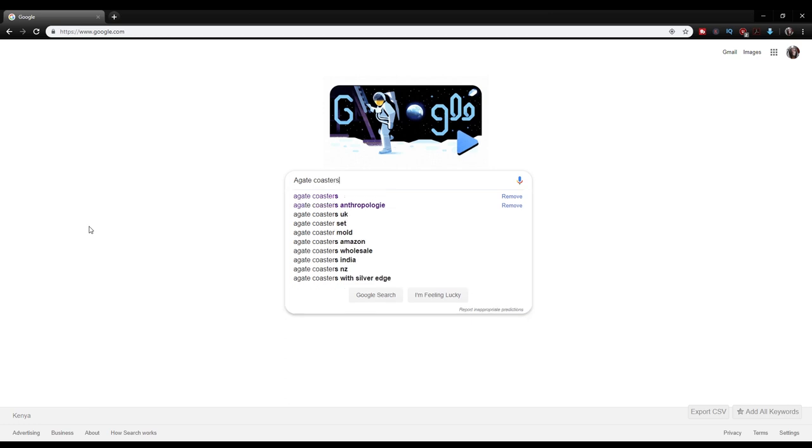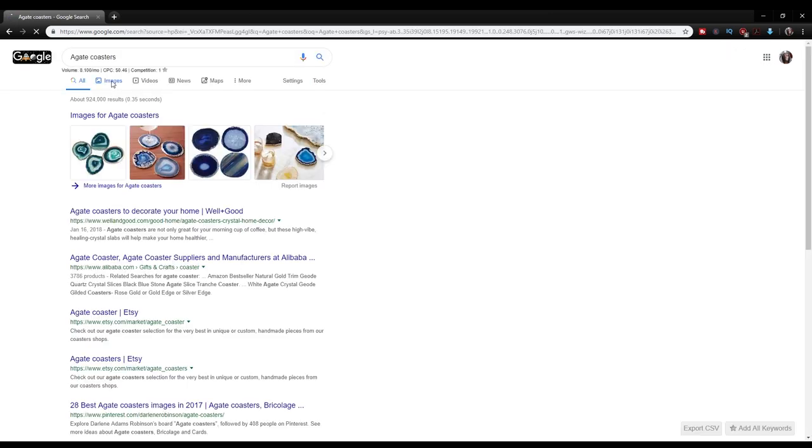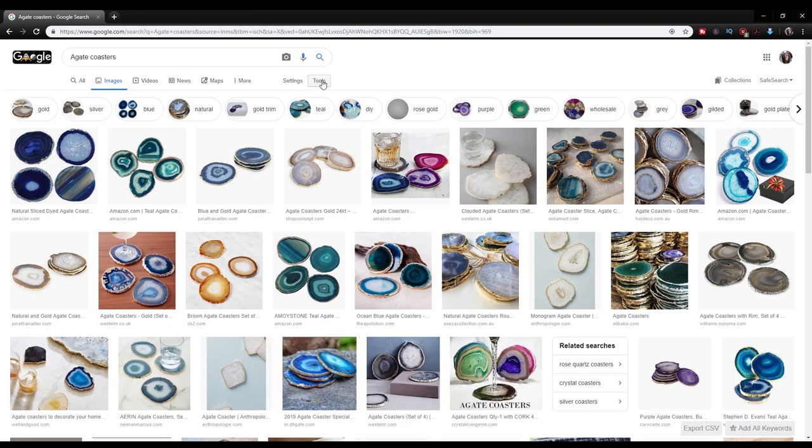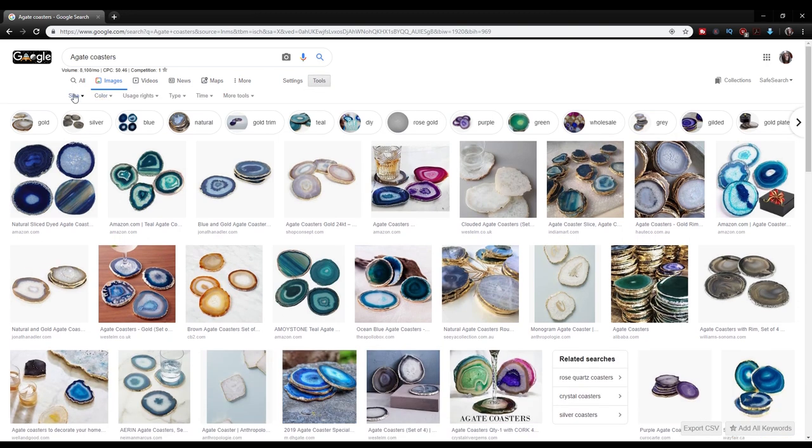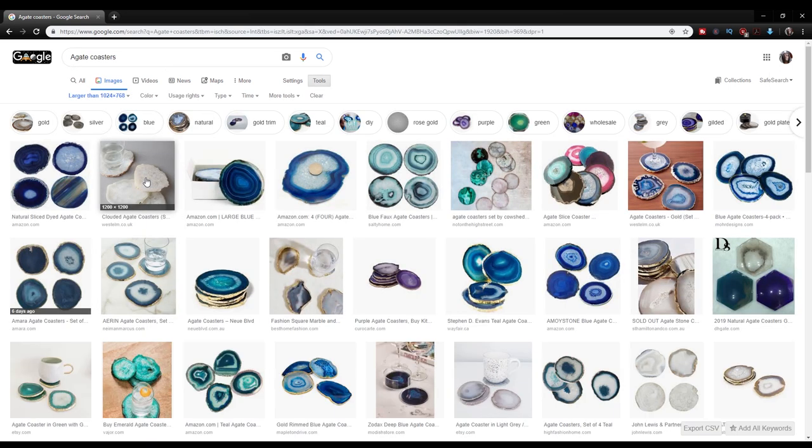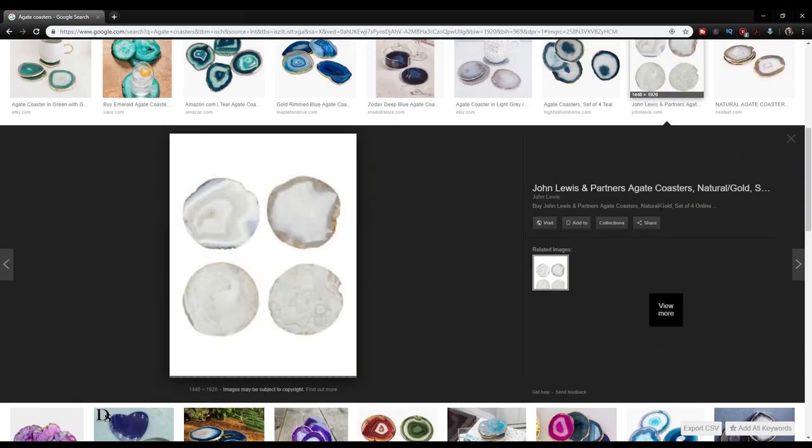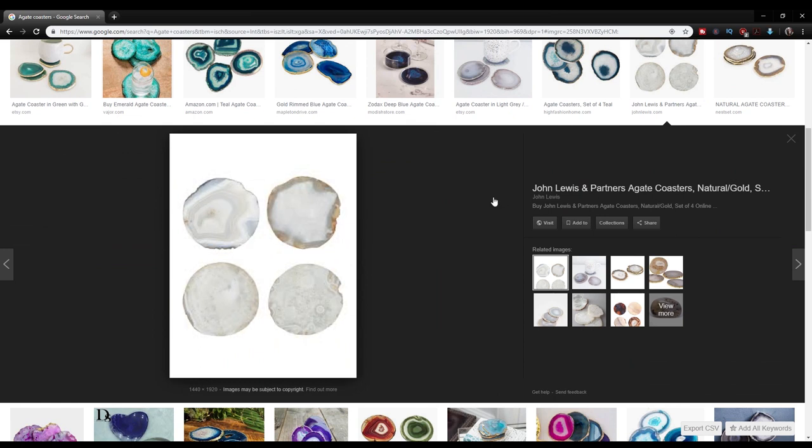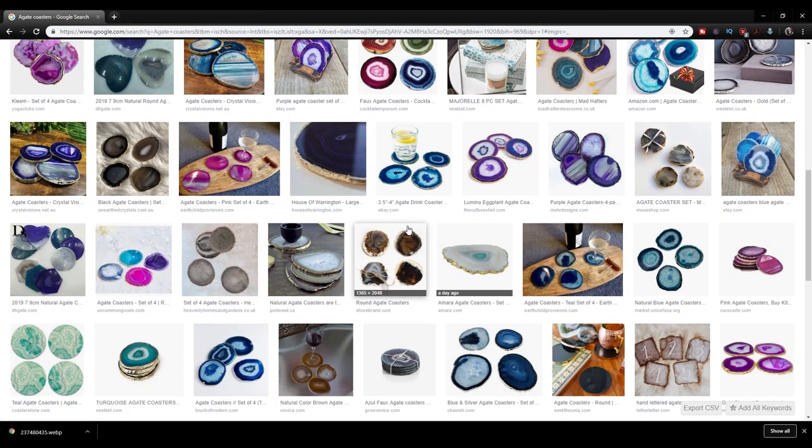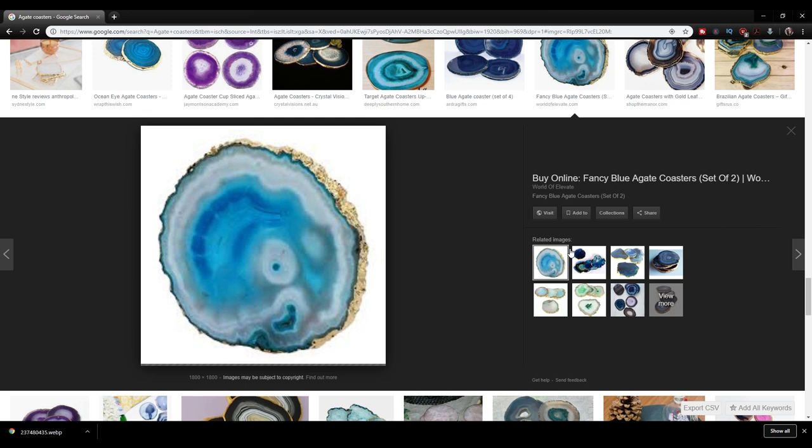First, select the images that you like to use. I went on Google and searched for agate coasters under images. Go to tools, then select size. Under size, choose larger than 1024 by 768. This ensures that your images are large enough and they will not be pixelated in case you want to manipulate them.